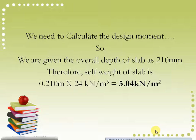The first thing we need to do is to calculate the design moment. We are given the overall depth of slab at 210 millimeters. Therefore, self-weight of the slab is 0.21 meters times 24 kN/m³ which equals 5.04 kN/m². We have converted the 210mm to meters and we know that the unit weight of concrete is 24 kN/m³.